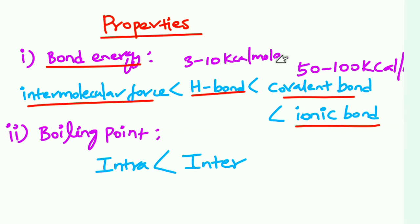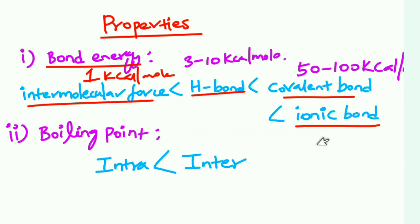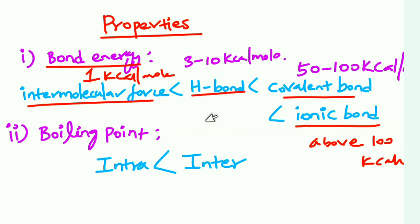Hydrogen bond energy is 3 to 10 kcal per mole. Covalent bond is 52 to 100 kilocalories per mole. Ionic bond is above 100 kilocalories per mole. Intermolecular force (van der Waals force) is about 1 kilocalorie per mole. So the order is: ionic > covalent > hydrogen bond > intermolecular force.